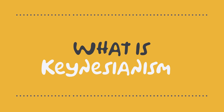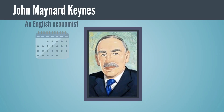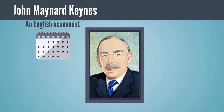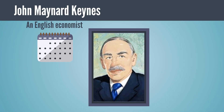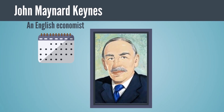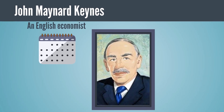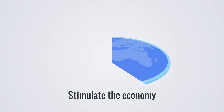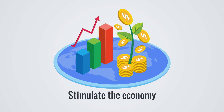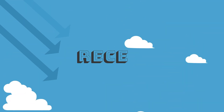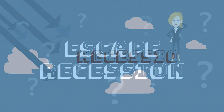What is Keynesianism? John Maynard Keynes was an English economist made famous for his work in the early to mid 1900s. Keynes was well known for his ideas on how to stimulate the economy during recessions to both shorten and lessen their impact.